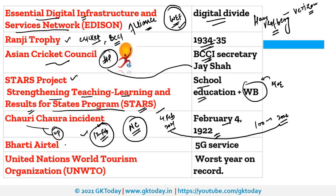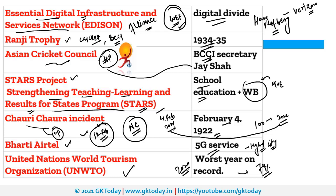Bharti Airtel is the first telecom operator in India to demonstrate 5G services. Recently they started 5G services in Hyderabad on a trial basis. As per UNWTO — the United Nations World Tourism Organization — 2020 was the worst year on record for the tourism sector. Because of coronavirus, international arrivals dropped by 74%.